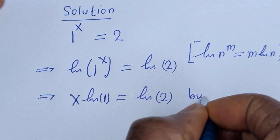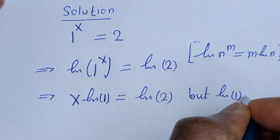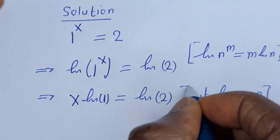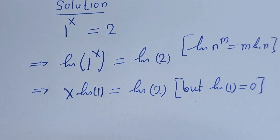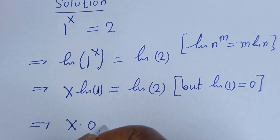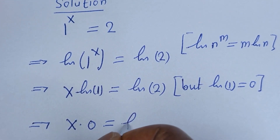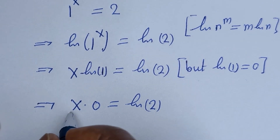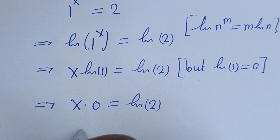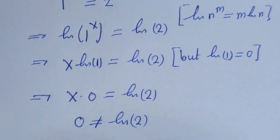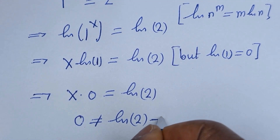But natural log of 1 is equal to 0. Then we have s multiplied by 0 is equal to natural log of 2. Now s multiplied by 0 is 0, and 0 cannot be equal to natural log of 2. At this point, we conclude that there is no real solution here.